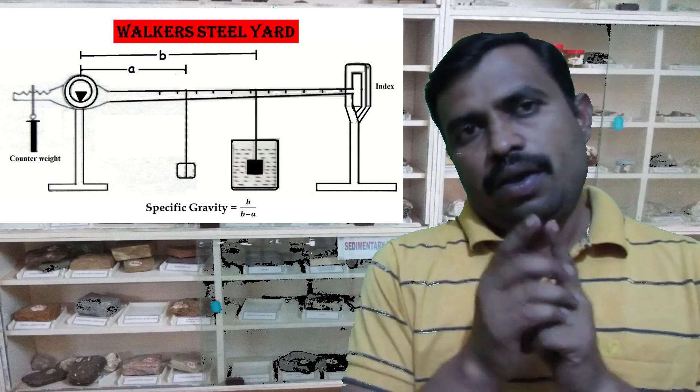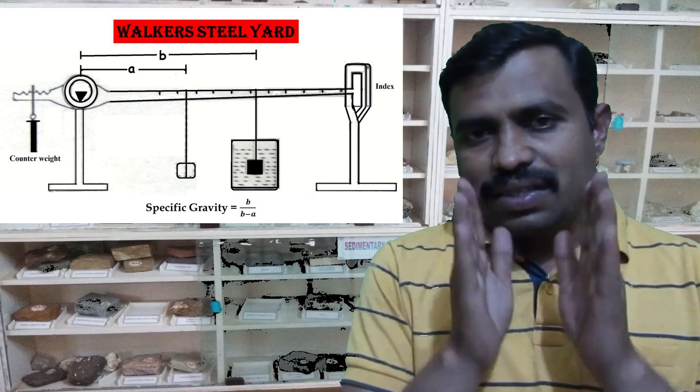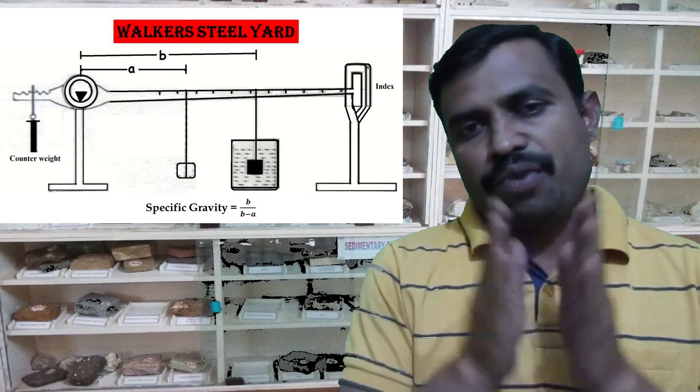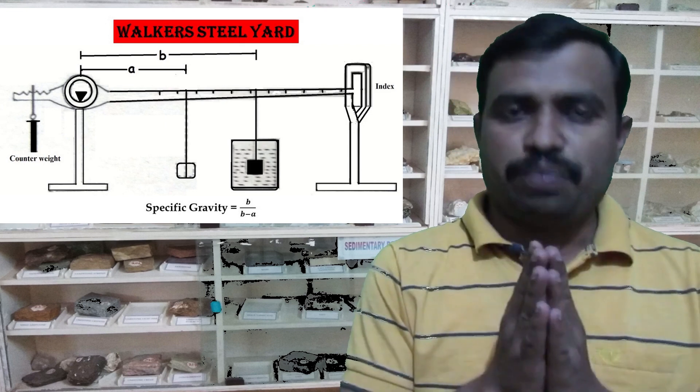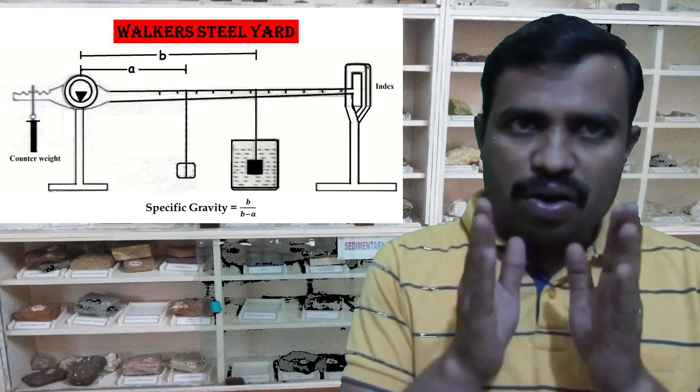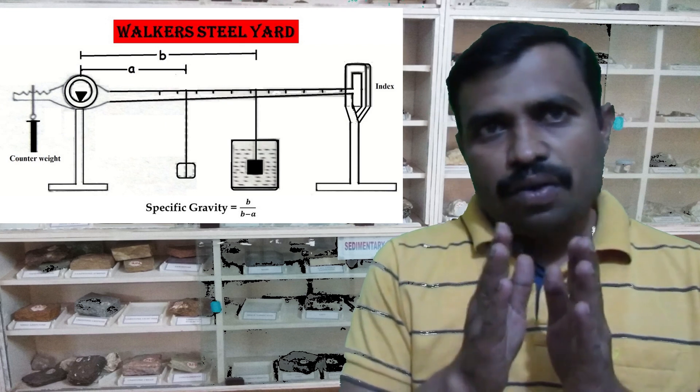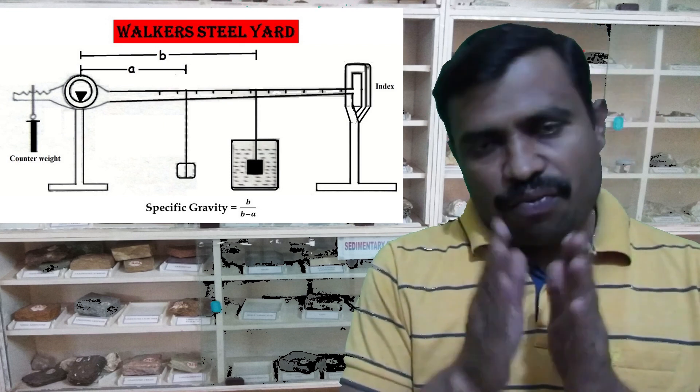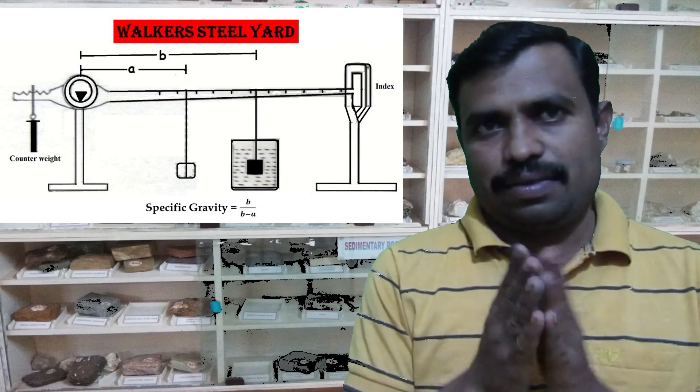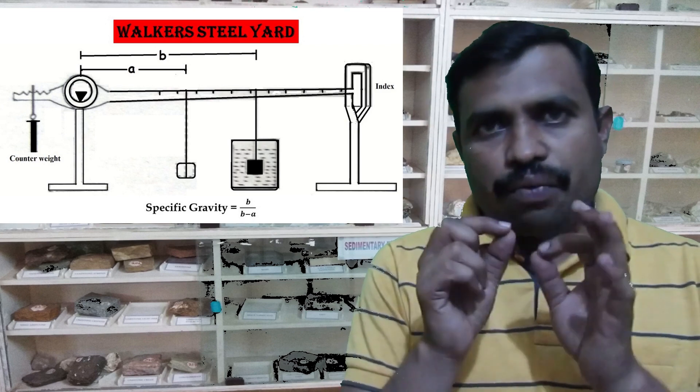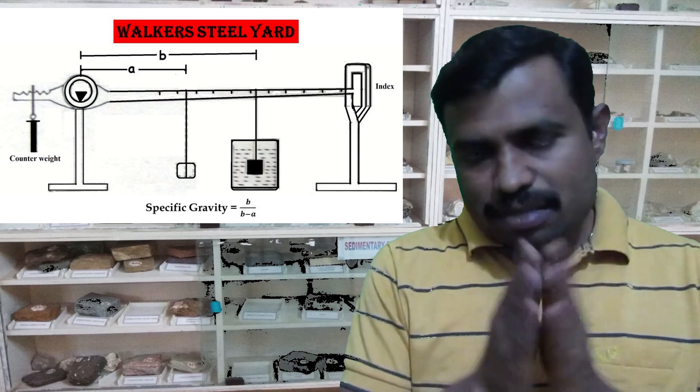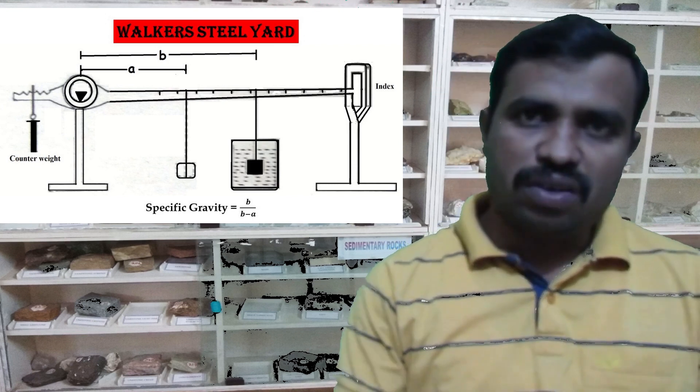Now we will see what is the Volker's steelyard. Volker's steelyard is an instrument which is mainly used to determine the specific gravity of comparatively large mineral specimens. The instrument consists of a graduated long horizontal beam of steel, which is supported near one end on a knife edge, as shown in my side figure. At the end of the longer arm, a vertical post is placed which bears an index mark, which helps in aligning the beam to the horizontal position.